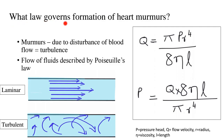What law governs the formation of heart murmurs? This law is used extensively in fluid dynamics and it is called Poiseuille's law — pardon my pronunciation, it is a French word. This law describes the flow of fluids. And how are murmurs produced? Essentially murmurs are produced because of disturbance of blood flow, that is because of the presence of turbulence.